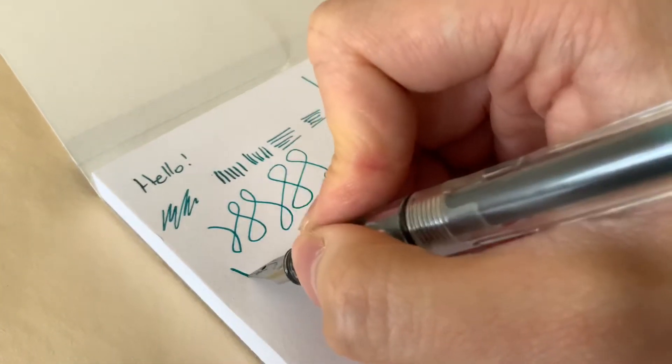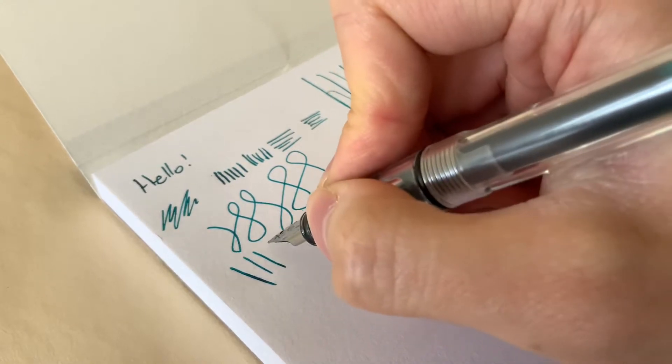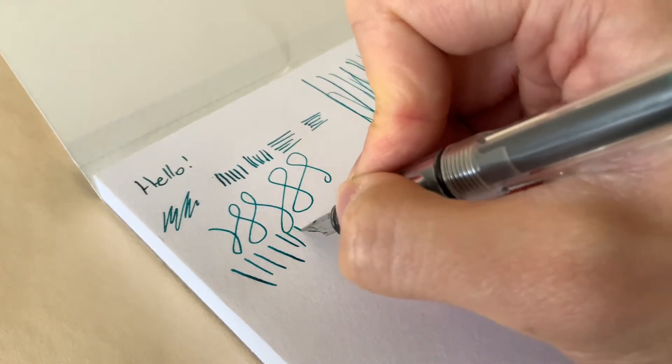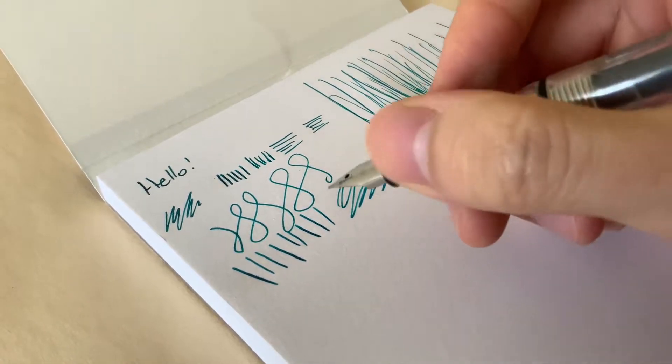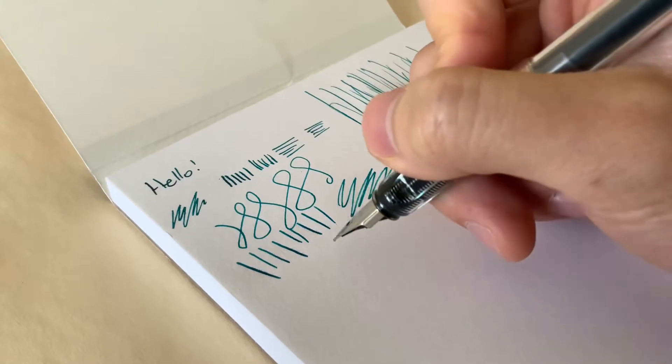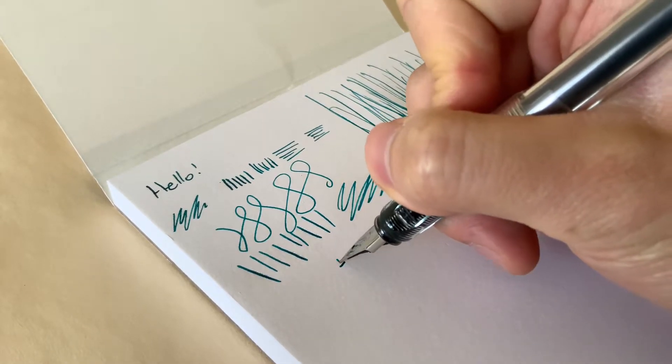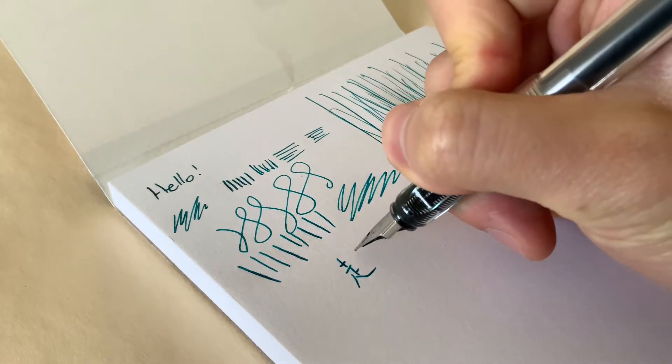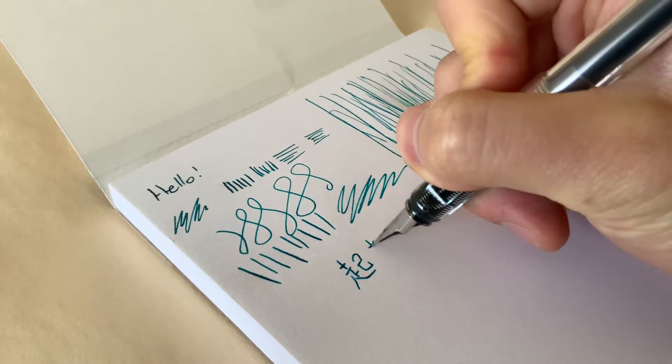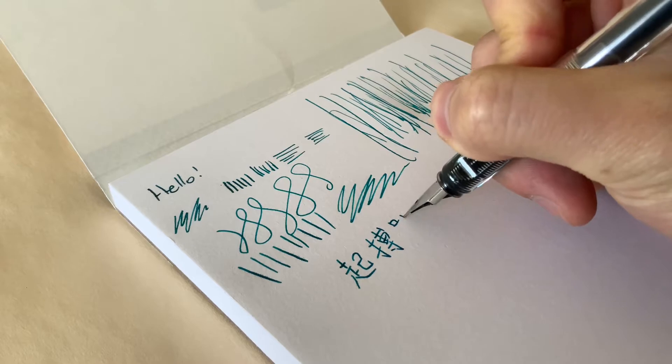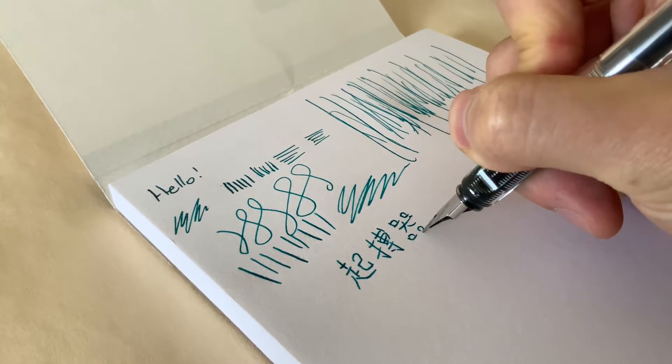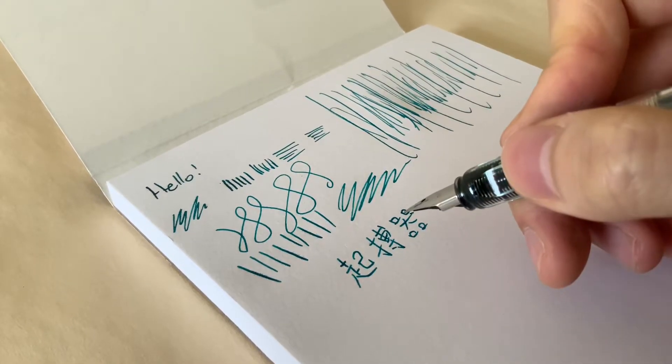Line variation. Not much. It's a very rigid, stiff nib. Not bad though. I'm going to write some Chinese characters. It's just a Chinese word for pacemaker.